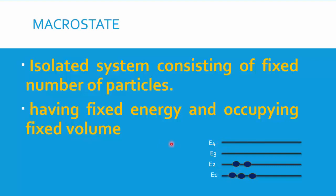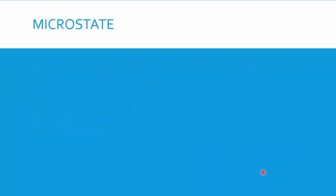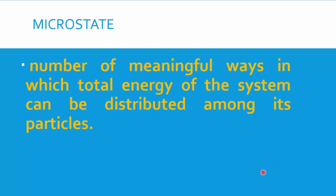For example, consider a container containing many particles. If you distribute these particles into energy levels — say three particles in energy level E1, two particles in energy level E2, one particle in E3, and one in E4 — the total number of particles is fixed, the total number of energy levels is fixed, and the container has a fixed volume V. This information is called macrostate.